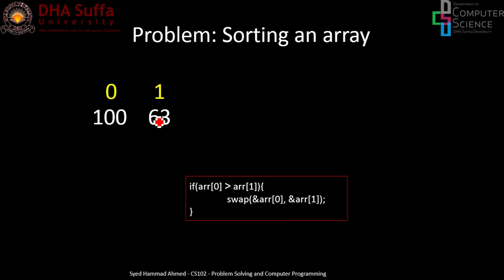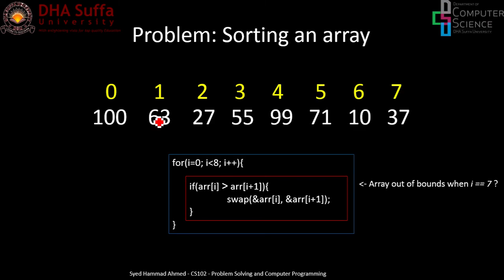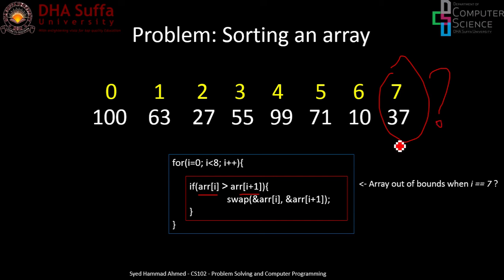Once we've designed this, we simply repeat the comparison step. We had n numbers, so we add a for loop — the blue box — that runs eight times. However, if you do a dry run you'll notice that when i equals 7, the if-statement checks if ARR[7] is greater than ARR[8], but ARR[8] doesn't exist. That's an array out-of-bounds problem.